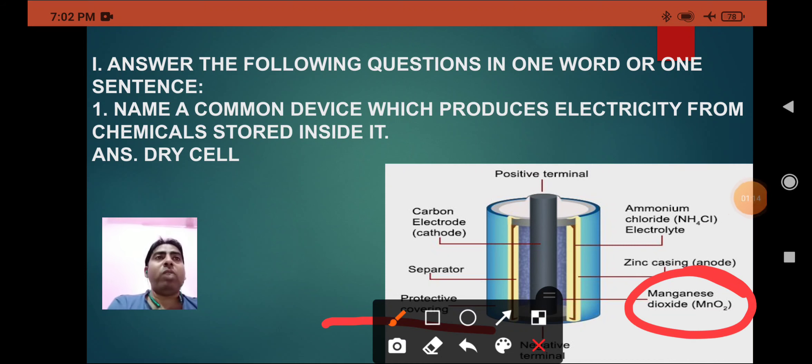The remaining space inside the zinc container is filled with a thick paste of ammonium chloride. The outer side of the zinc container is covered with a cardboard cover except the bottom. The cell is sealed except the metallic brass cap and the base.